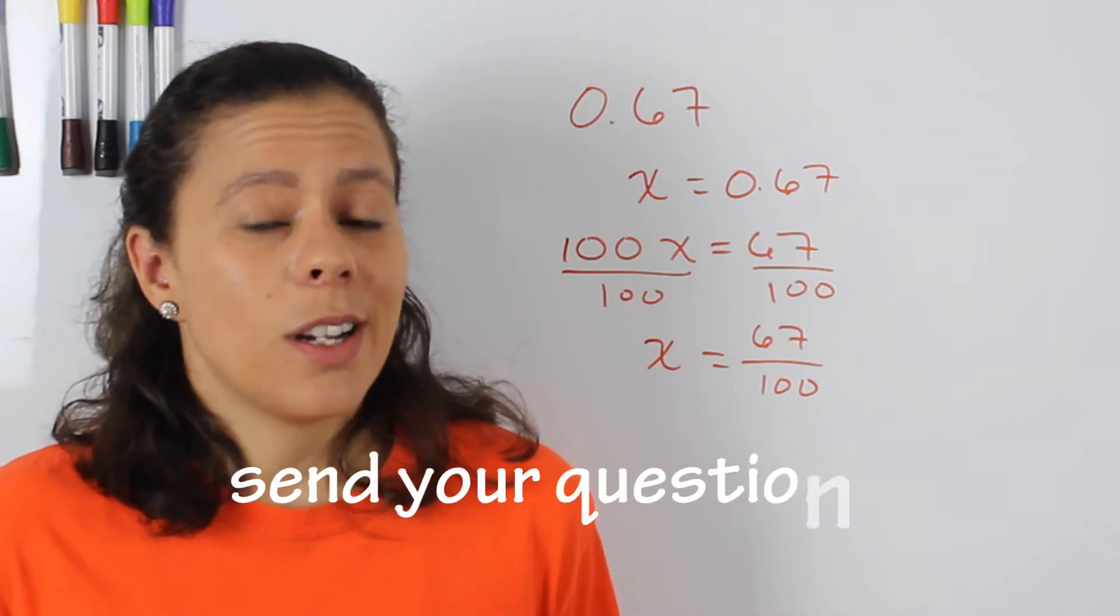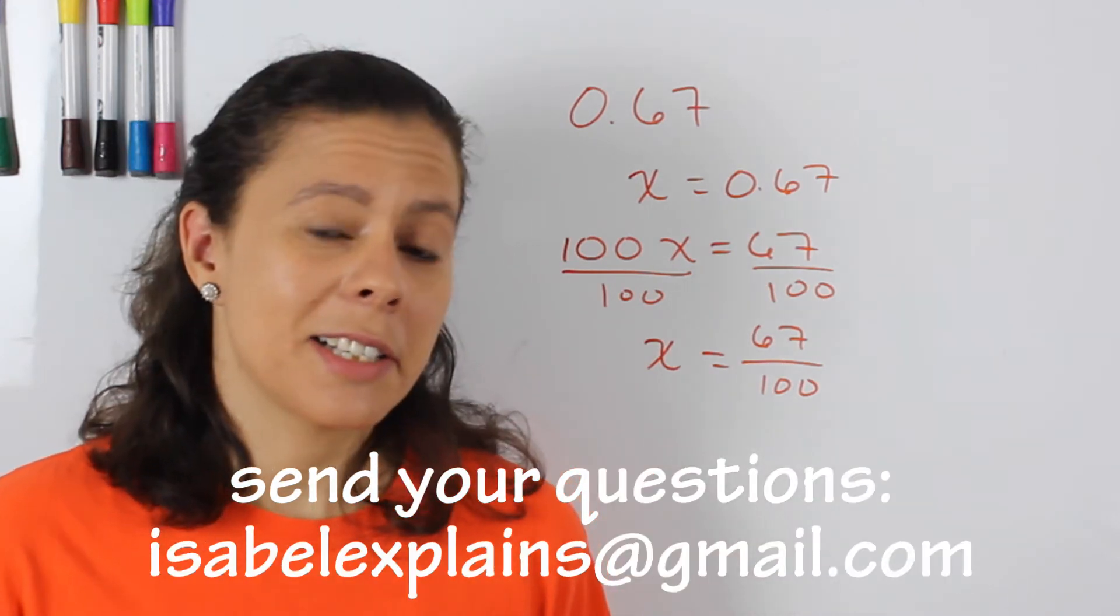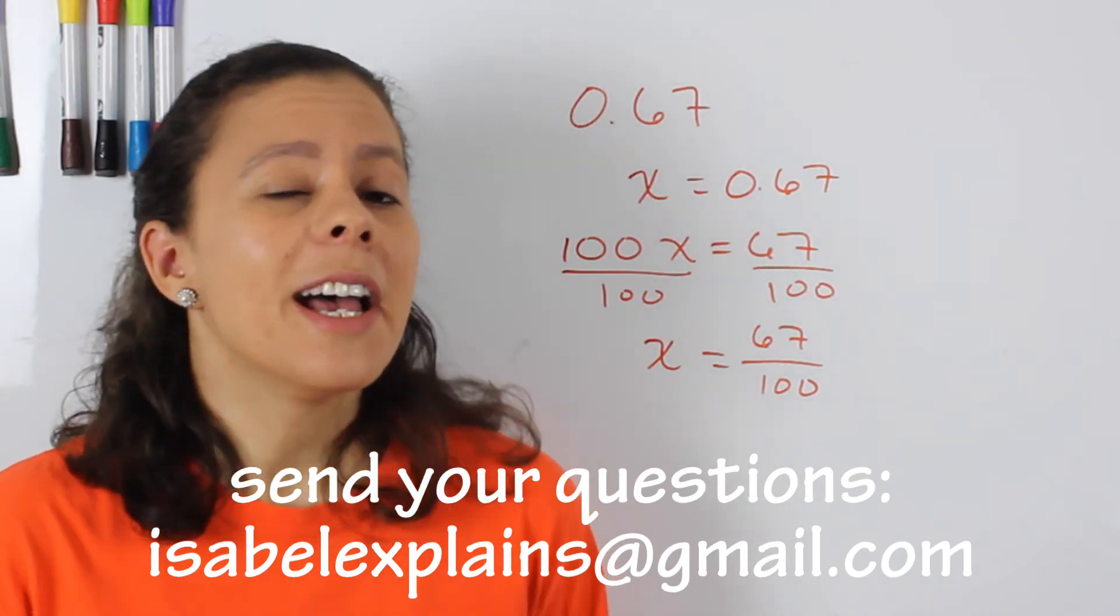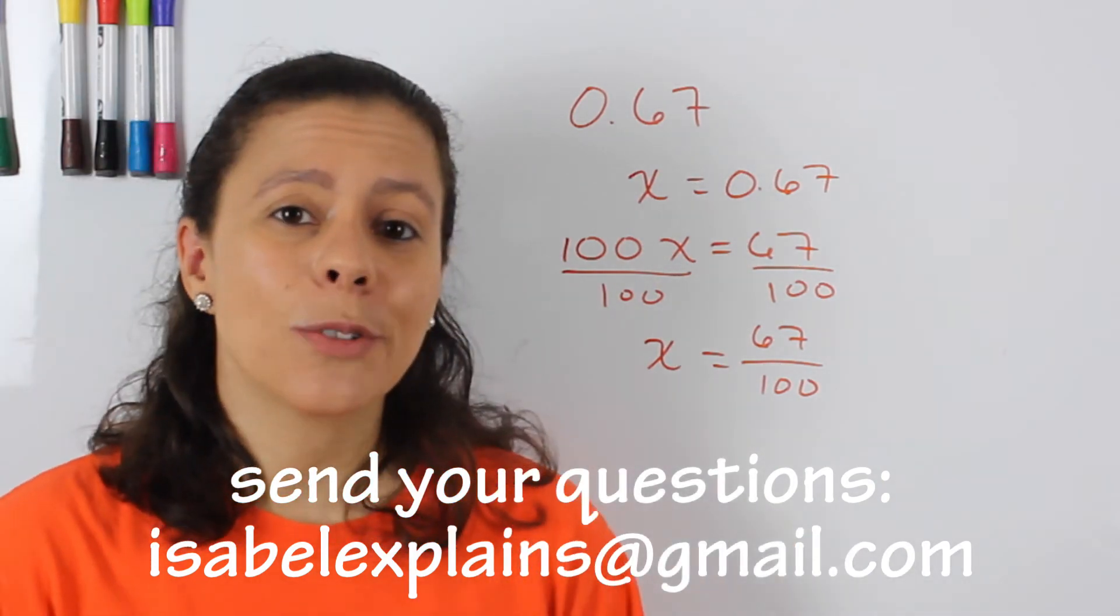And since 67 and 100 don't really have any common factors, as a matter of fact, 67 is prime, which means it has no factors other than one and itself. That is it. That is the simplest form of that fraction.